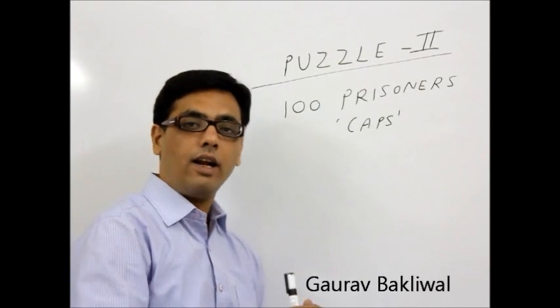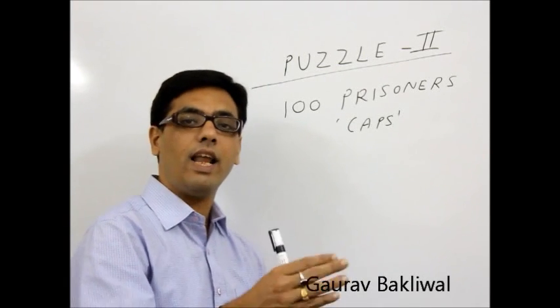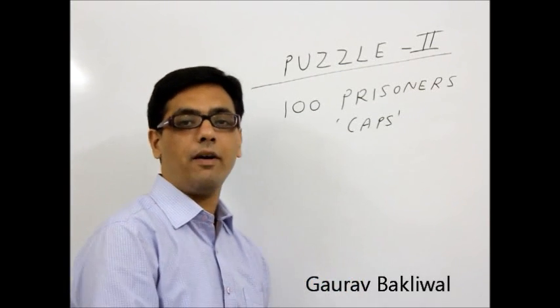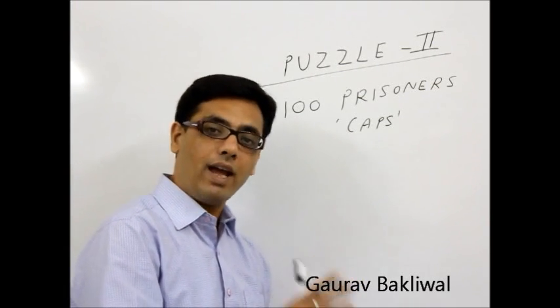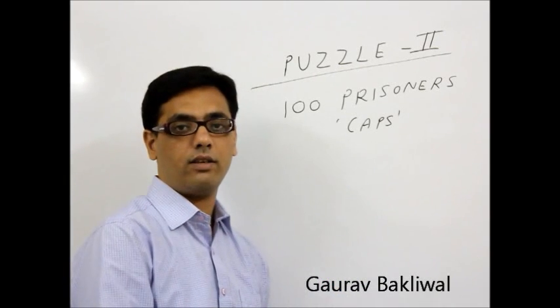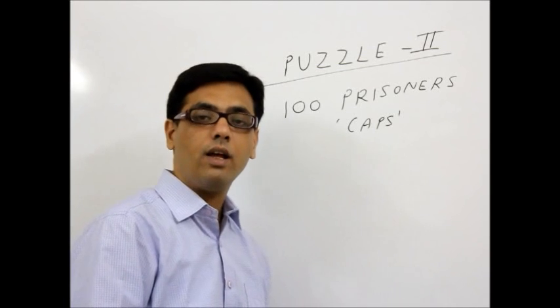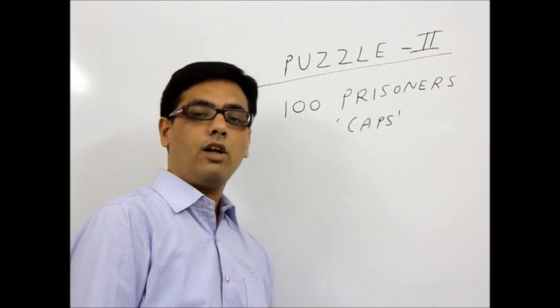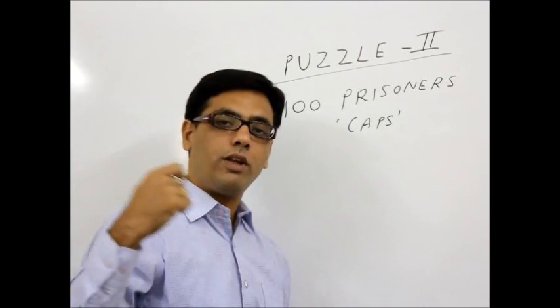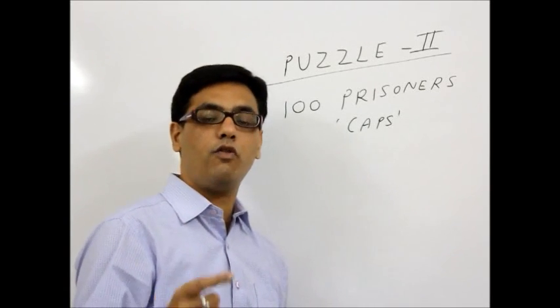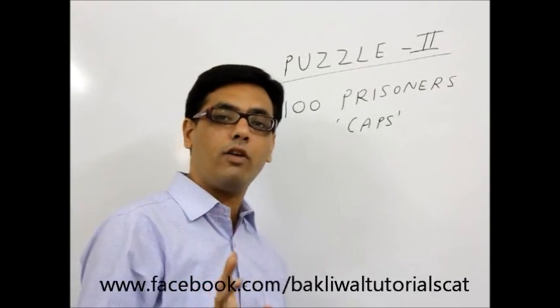Now what happens is, there are 100 prisoners who are standing in a line. They all are wearing caps which are either black color or white color. They obviously don't know which color cap is there on one's head. There is a jailer who starts from the last prisoner and he will ask the last prisoner which color cap you are wearing.